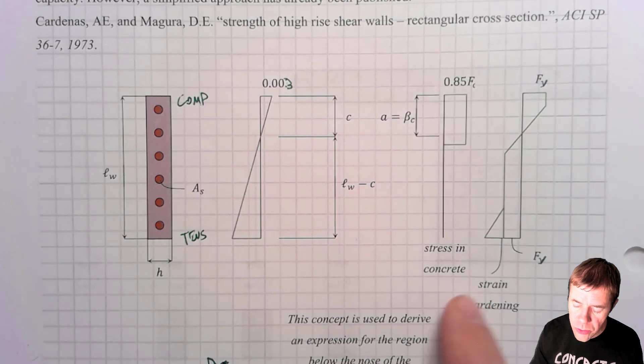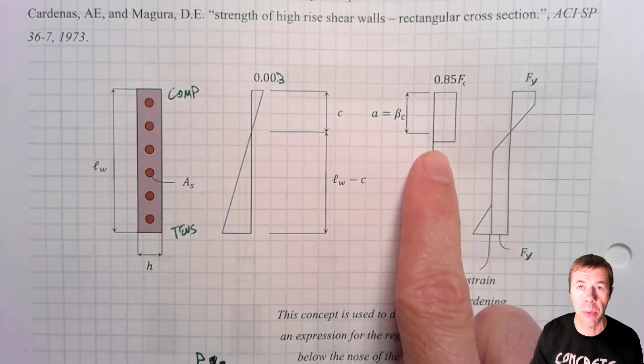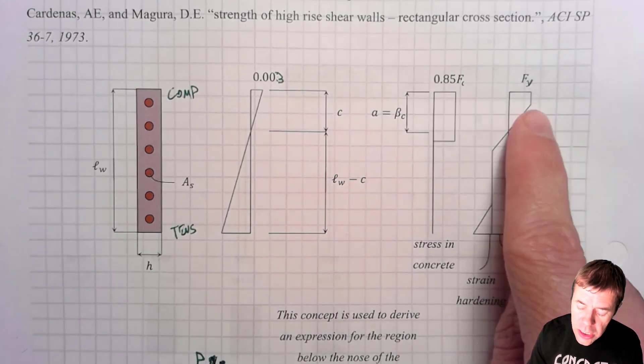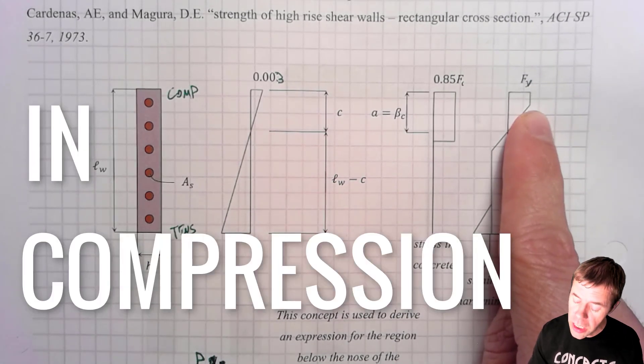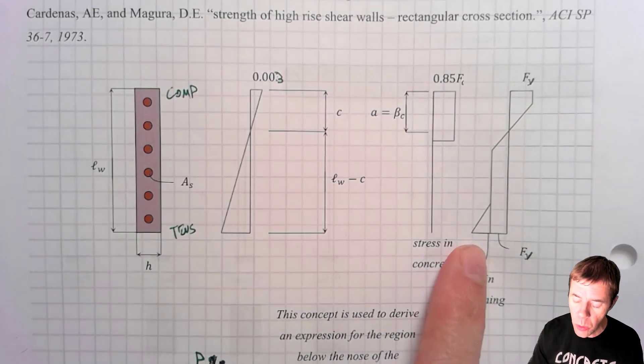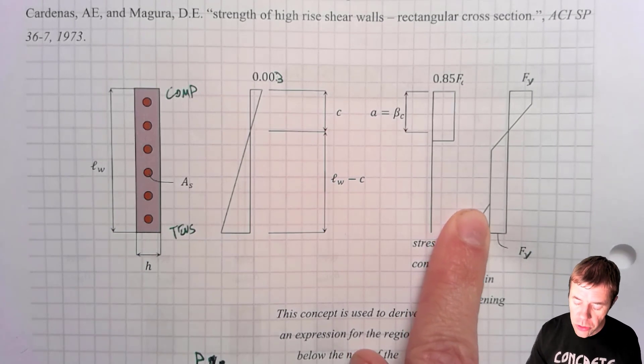This is going to be L sub W, the length of the wall. That will be H, the height of the wall or the B that you would usually use in a normal beam or a column. Now, just like a column, we're going to assume the strain here at the top is 0.003. This is C. This would be LW minus C. And this is what the stress looks like in the concrete. Some kind of Whitney stress block type compression up here. This is what the stress looks like in the steel. It's going to be yielded at the top in compression, yielded at the bottom in tension. And there will be some strain hardening, but we're going to ignore that and act like things are pretty much at yield.